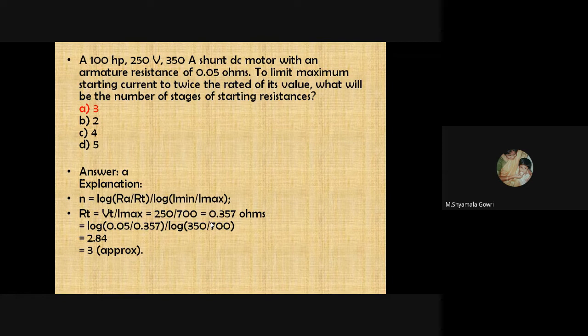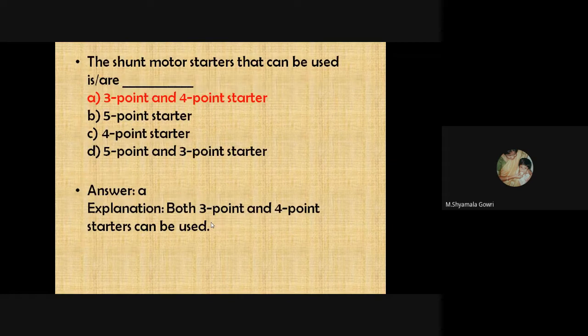For a 100 HP, 250-volt, 350-amp DC shunt motor with armature resistance of 0.05 ohms, to limit the maximum starting current to twice the rated value, the number of stages of starting resistance is approximately 3. The starters that can be used for a DC shunt motor are the 3-point starter and the 4-point starter.